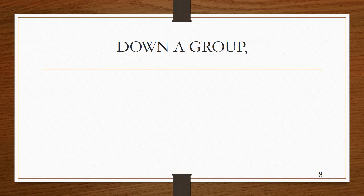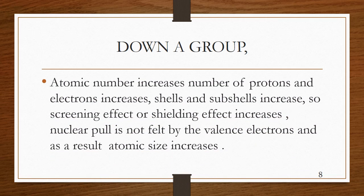Down the group, atomic number keeps on increasing, causing an increase in protons and electrons. Here, electrons are entering different shells and subshells. As a result, the screening effect and shielding effect also keep on increasing, so the nuclear pull is not felt by the outermost electrons. With this result, the size of the atom keeps on increasing down a group.